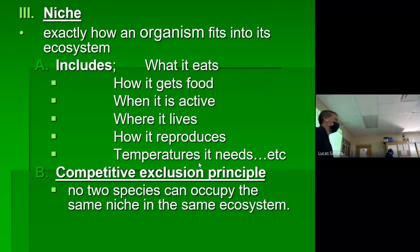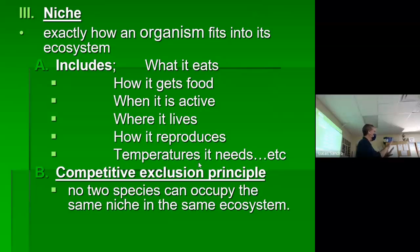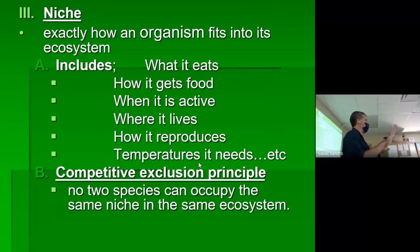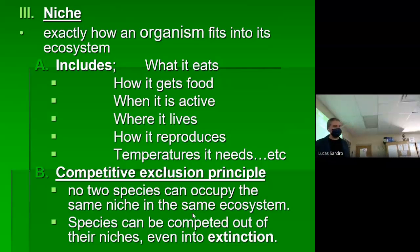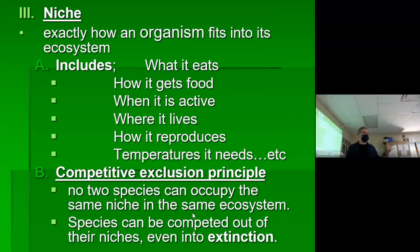Maybe it's time of day that's the last differentiator — the individuals of the losing species that can operate a little later at night survive because they're not being competed out as much by the diurnal winner. Little by little, that losing species becomes nocturnal, and now they're not overlapping anymore. So yes, species can be competed out of their niches — even into extinction — but usually the way it happens is they evolve into a slightly different niche. That's thing one today: the concept of niche and competitive exclusion.